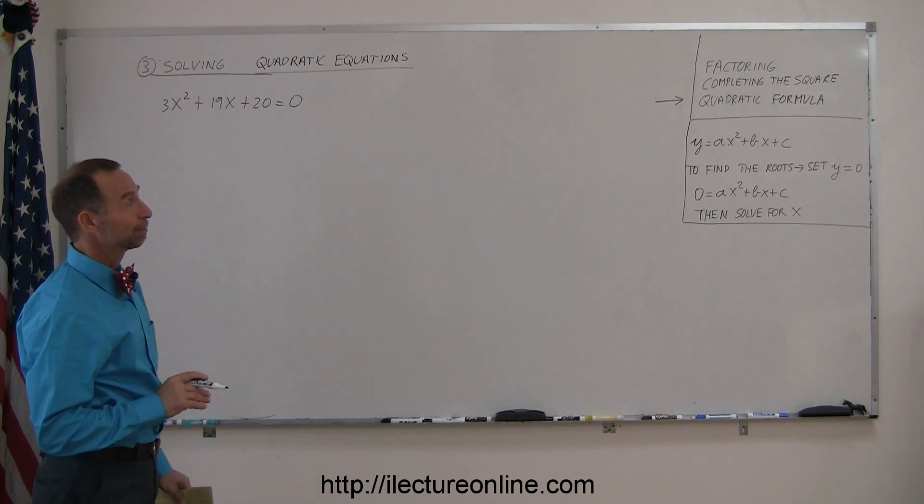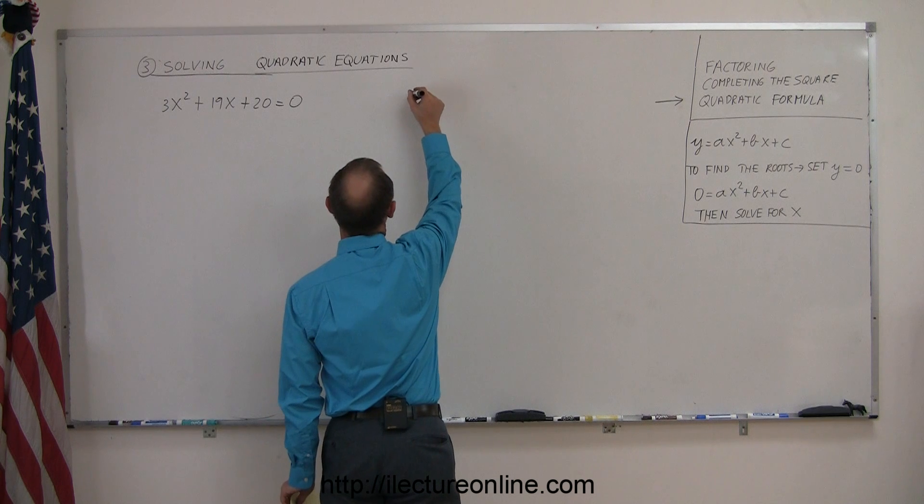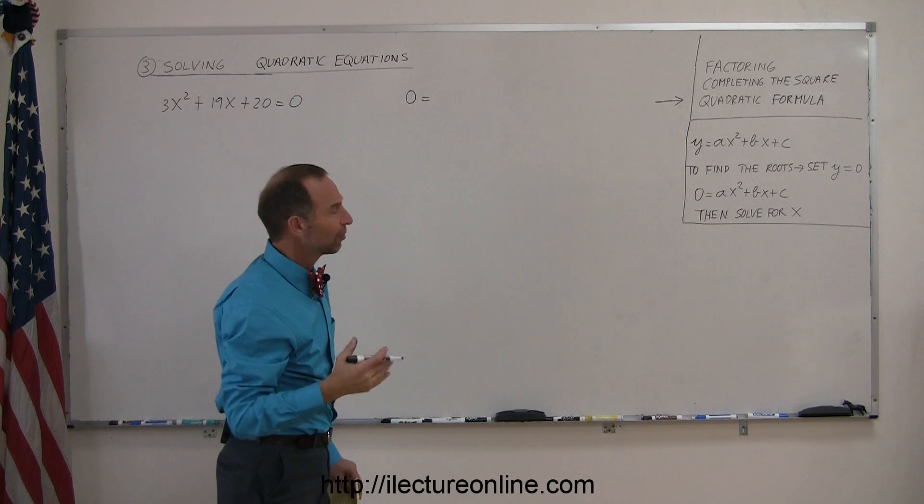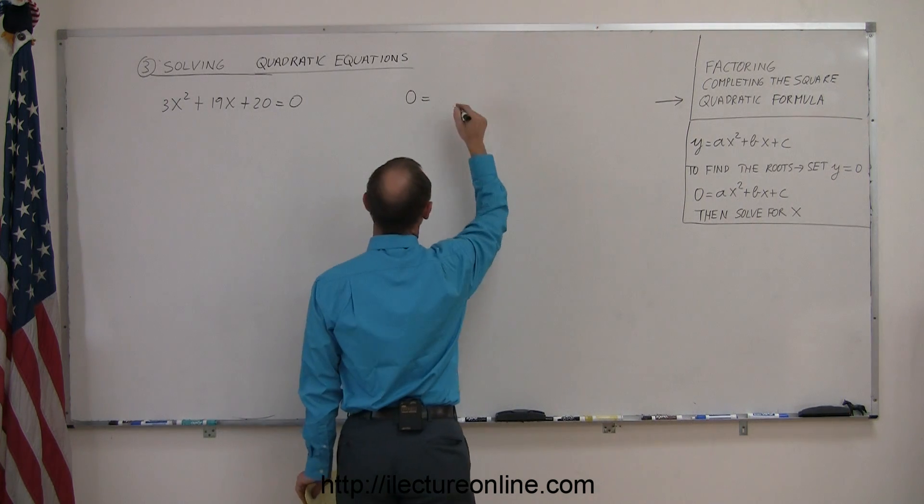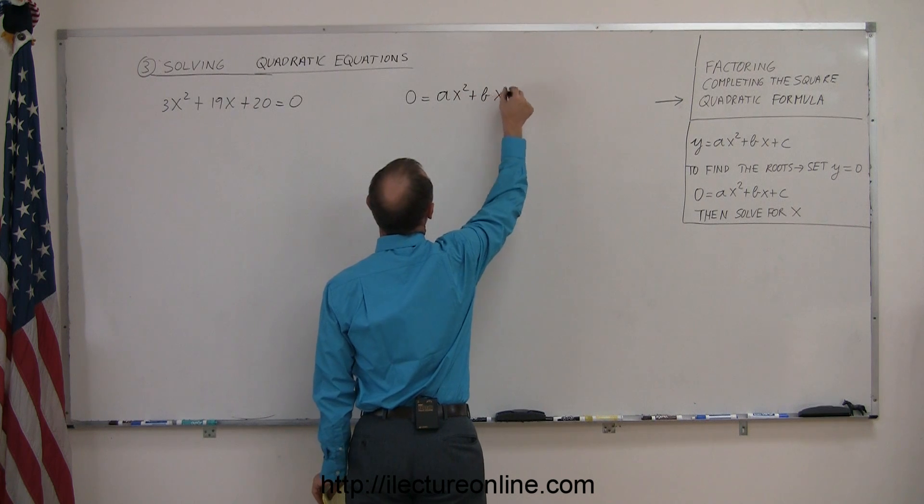Now, here's a little secret. If you use a completion of the square method on the general form of the quadratic equation, which is y equals, and of course in this case we write 0 for y because we're trying to find the roots, is equal to ax squared plus bx plus c.